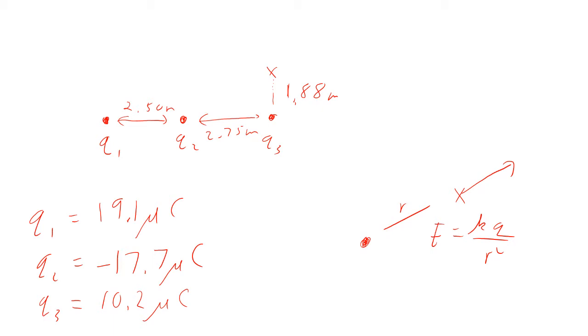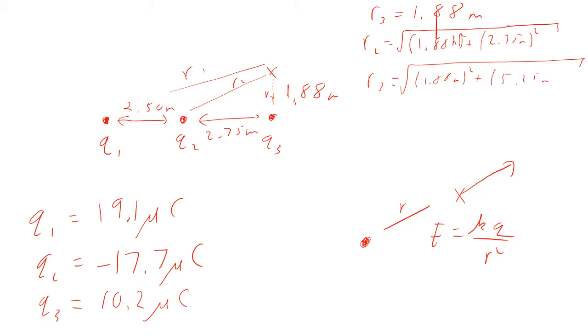So that means we need to calculate the distances. We need to find the distance R1, the distance R2, and R3. Clearly R3 is the easy one here. So R3 is 1.88 meters. R2, Pythagorean theorem, so that's the square root of 1.88 meters squared plus 2.75 meters squared. R1 is going to be the square root of 1.88 meters squared plus, and now we need to find the other distance. The other distance is going to be 5.25 meters squared.